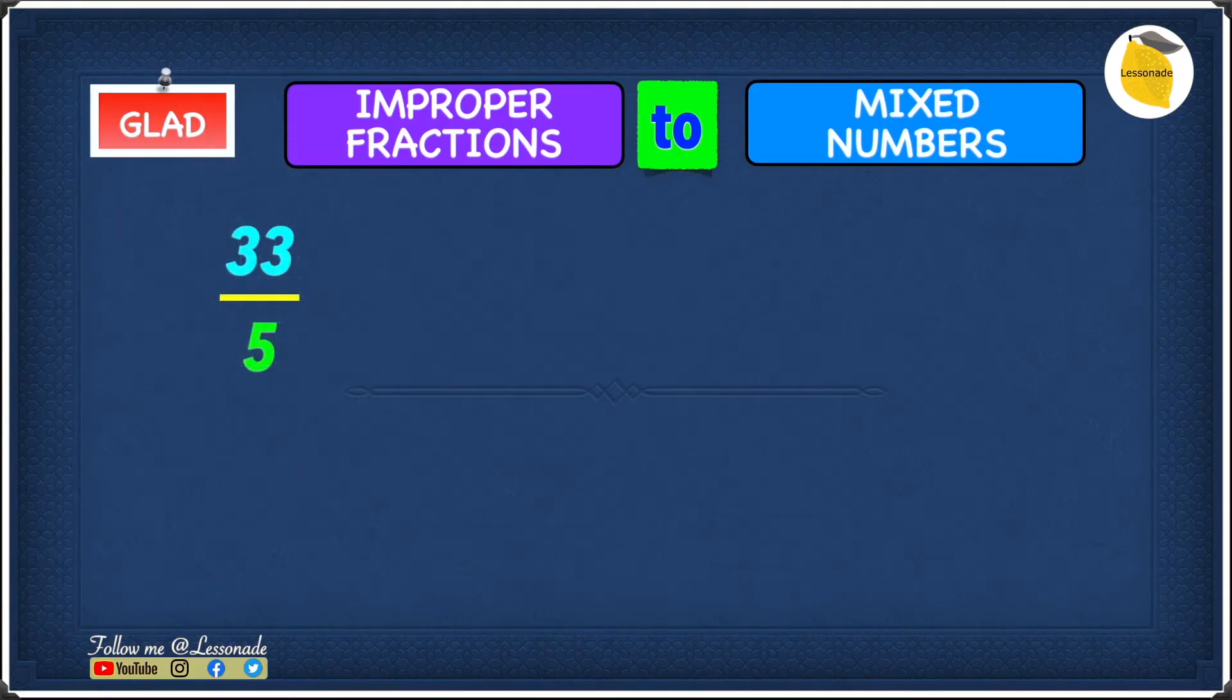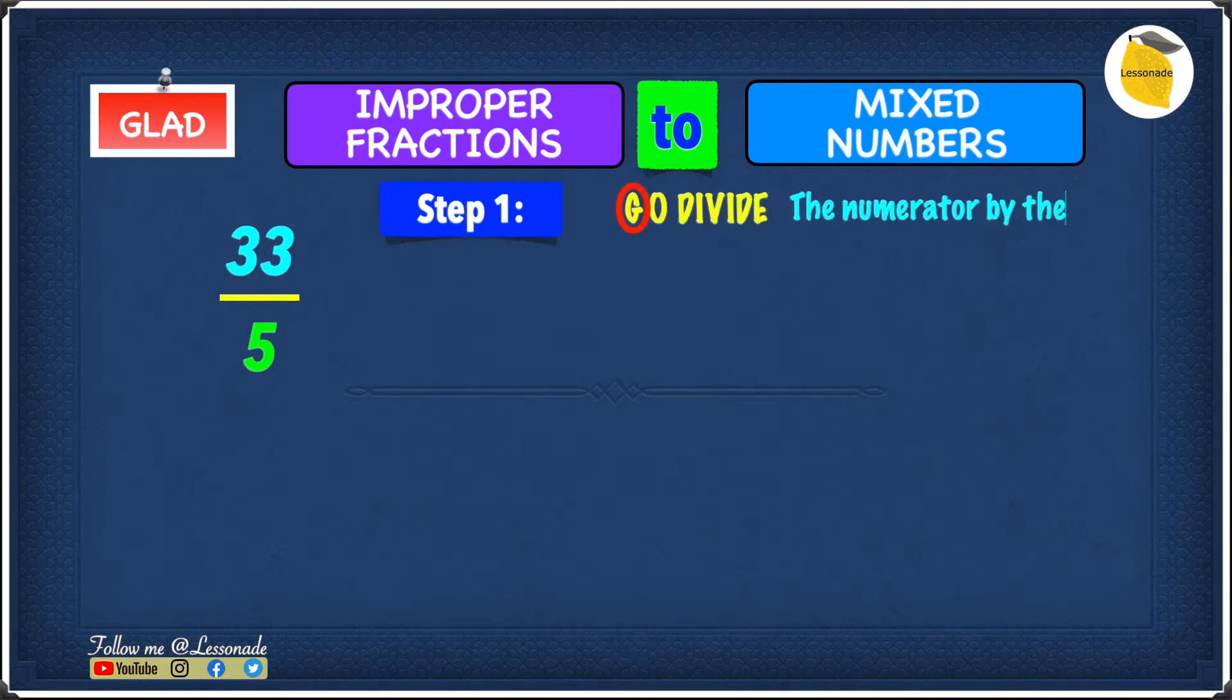So the example we have is 33 over 5. The first thing we're going to do is step 1, and step 1 is G. G is go divide the numerator, which is 33, by the denominator, which is 5. So 33 divided by 5 will give you 6 and remainder of 3.